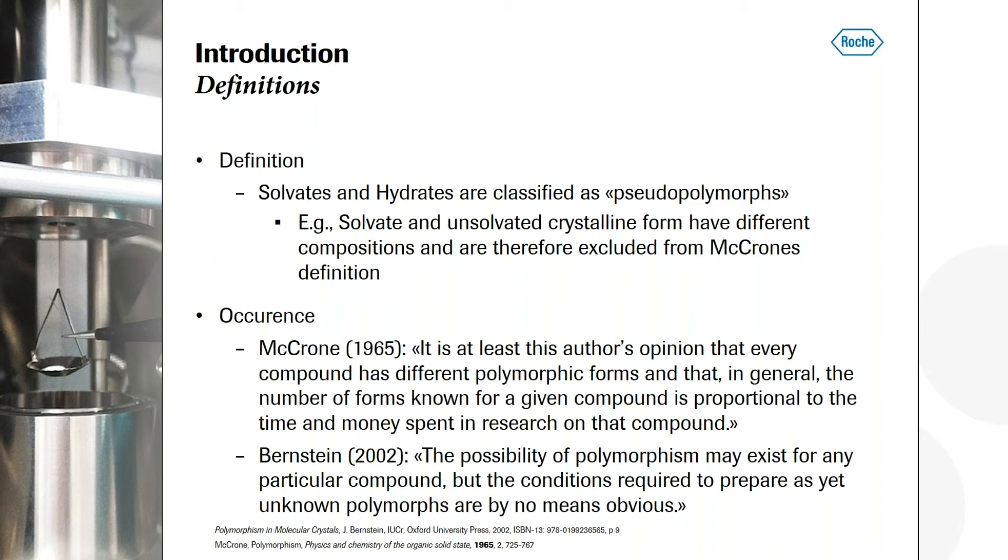Why is it important to think about this? And there I have some references, literature references. This is mainly focusing on true polymorphs, but I think it's also true for solvates and hydrates. Also from Walter McCrone, we have this quote: it's at least this author's opinion that every compound has different polymorphic forms, or in more general, we could say solid forms. And that in general, the number of forms known for a given compound is proportional to the time and money spent in research on that compound. And from my experience in the pharmaceutical industry, in most cases, that's really true. The more time you spend, the more solid forms you will find.